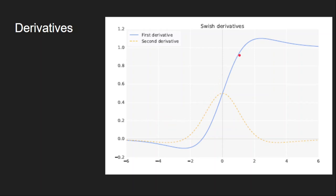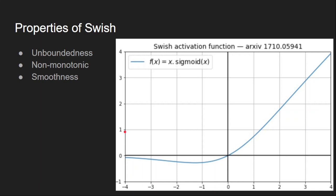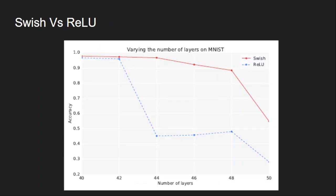This is the first derivative and this is the second derivative. Summarizing the properties of Swish: it is unbounded on the positive side — a desirable property that avoids the vanishing gradient problem — it is non-monotonic, which turned out to be a desirable property, and it is smooth so gradients exist at every point.